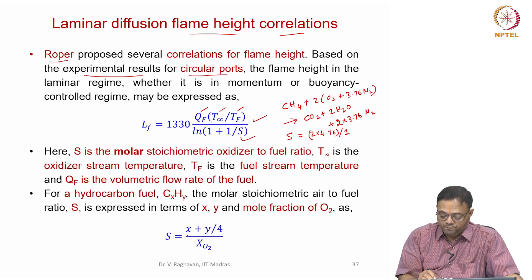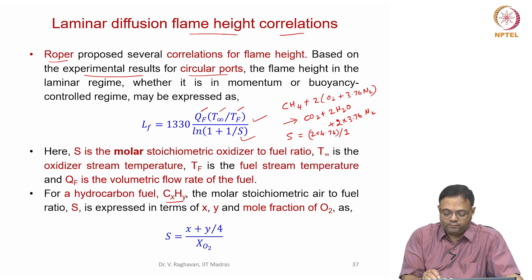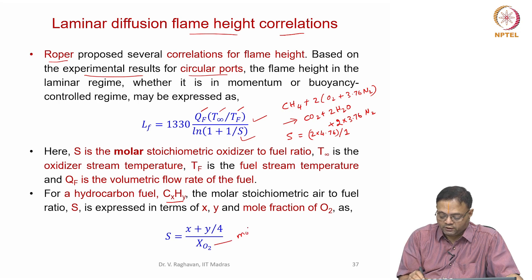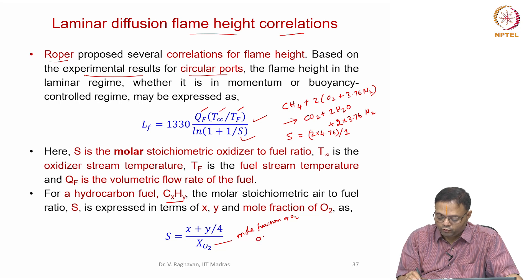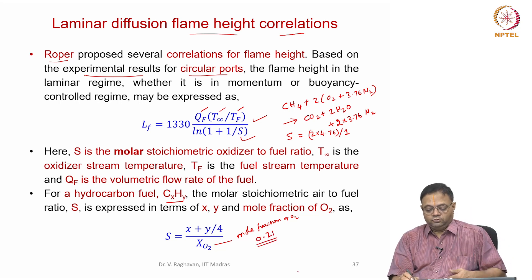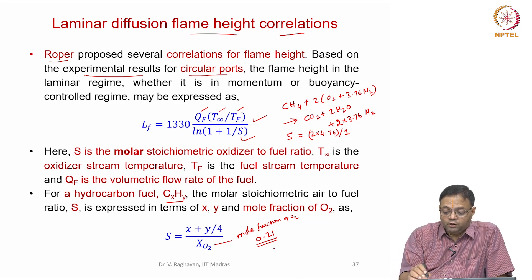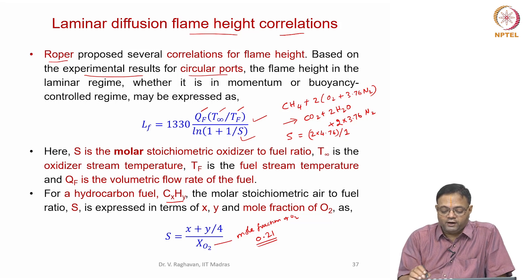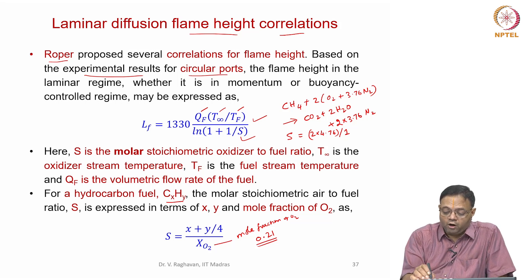For any hydrocarbon CₓHᵧ — that is, X carbon atoms and Y hydrogen atoms — S can be written as (X + Y/4) divided by the mole fraction of oxygen in the airstream. If normal air is used, this mole fraction equals 0.21. Note that it is the molar-based oxidizer-to-fuel ratio that is used here, not the mass-based fuel-to-air ratio.